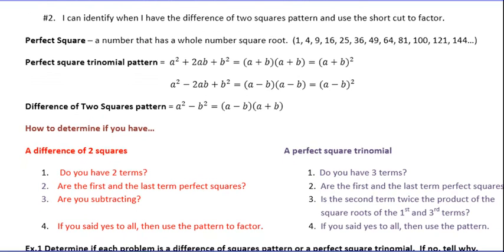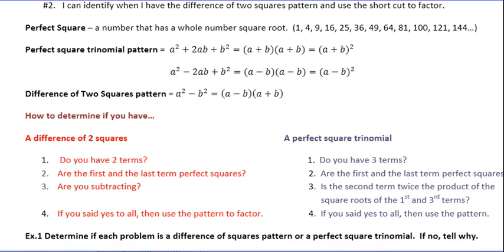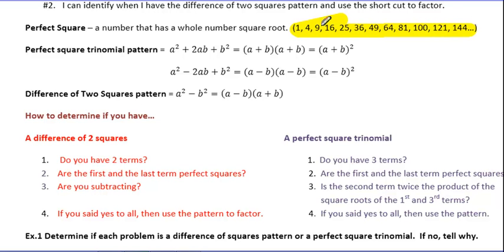Before we begin, it's important to have an understanding of what exactly a Perfect Square is. It's a number that has a whole number square root. These are all Perfect Squares. Two times two is four, three times three is nine. So we would say the square root of 16 is four, the square root of 25 is five, and so on. Those are Perfect Squares.